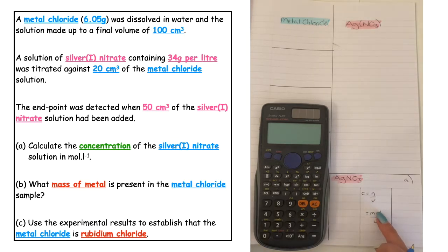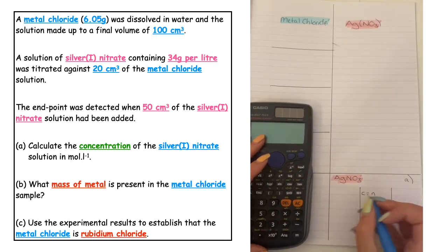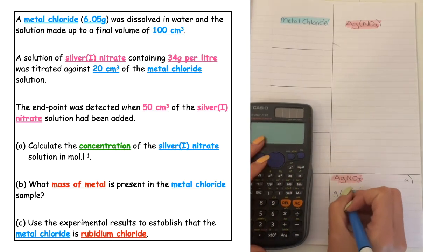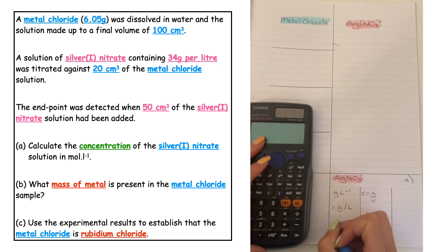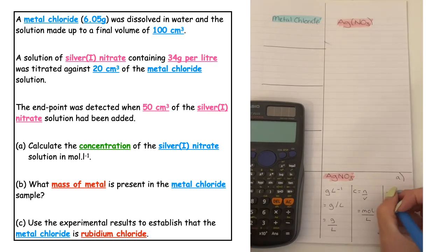In the question they have given us grams per litre, g/L, which is the same as grams over litres. We can see these two things are the exact same, so there must be a relationship between grams and the number of moles. This is where we need to calculate the number of moles using the mass triangle.